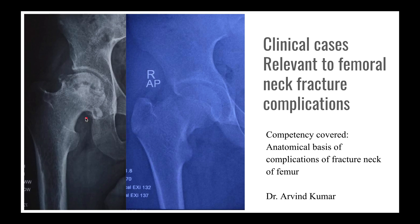On this side you can see there is some disruption in the contour of the femoral head. Normally the femoral head is round in shape, but here you can see it is irregular. There is also irregularity in the density of the bone in the femoral head — you can see lytic areas and sclerotic areas. We will be discussing these findings in detail in later slides.